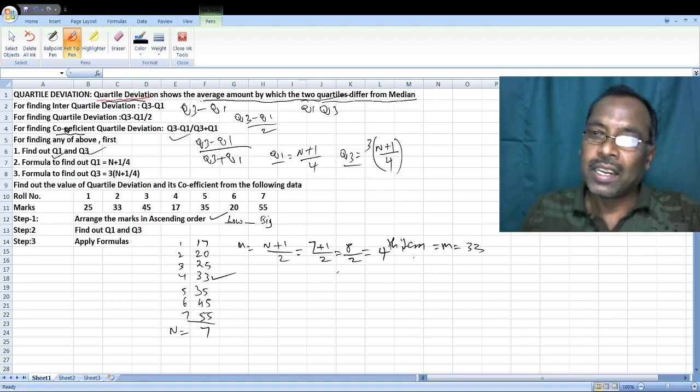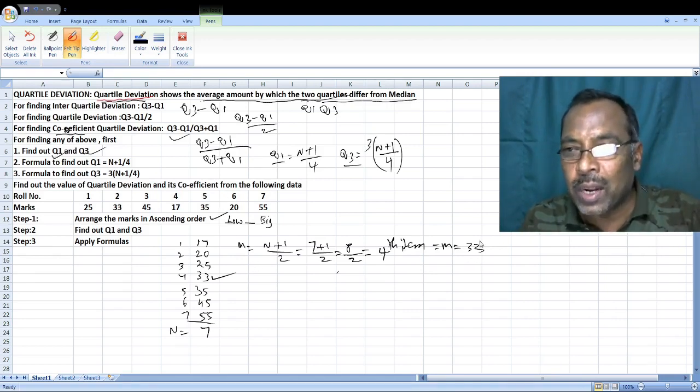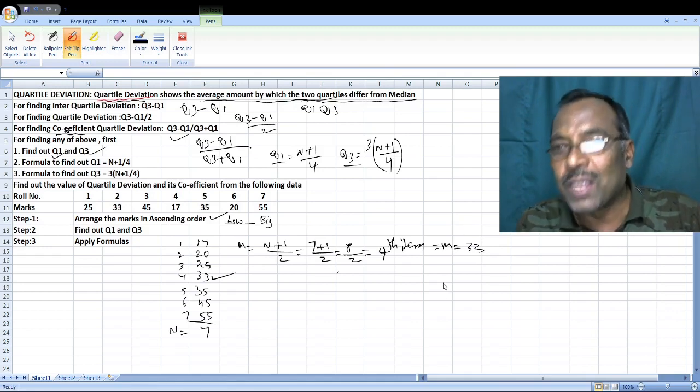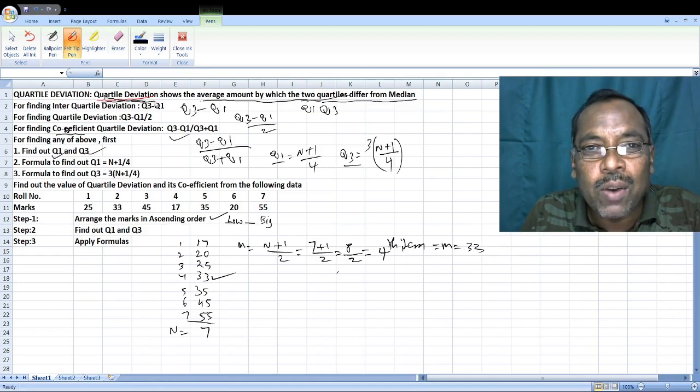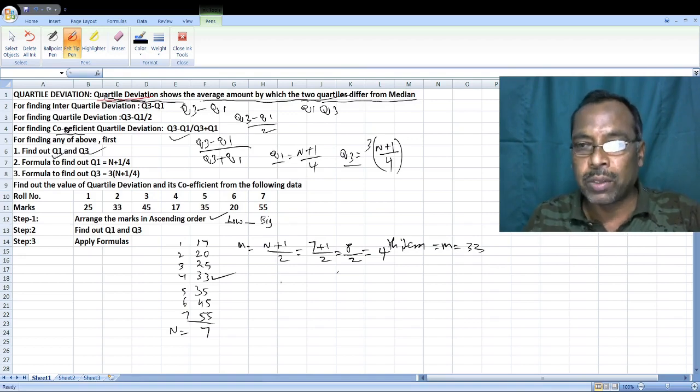Now we need to find Q1. Median and Q1 - how much distance is there? Q3 - how much distance is there? This is quartile deviation. The average amount by which two quartiles differ from median.